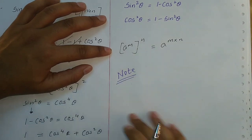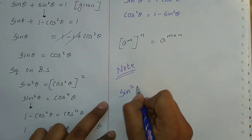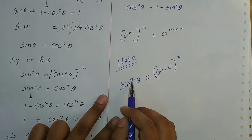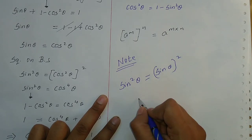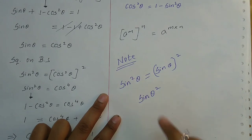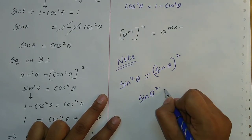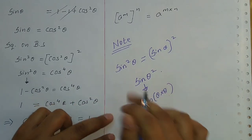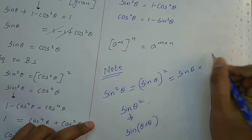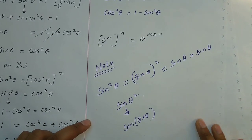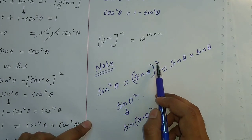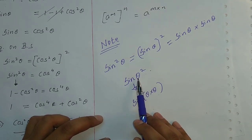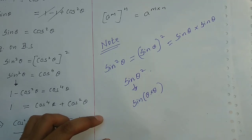An important note: sin²θ means (sin θ)², which equals sin θ × sin θ. The square applies to the entire expression in brackets, not just the angle. This is an important concept to remember.